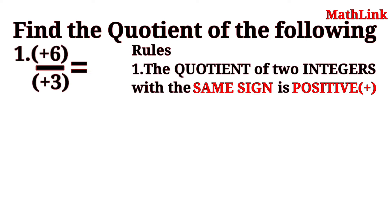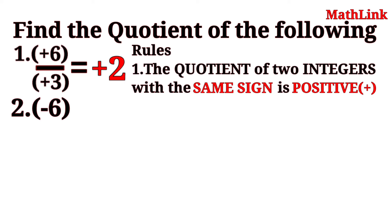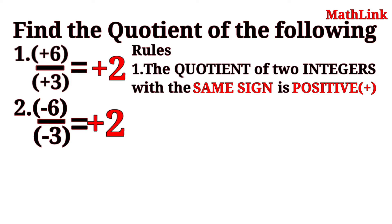Let us answer number 1. Positive 6 divided by positive 3 is equal to positive 2 — positive sign because the two integers have the same positive sign. Number 2: Negative 6 divided by negative 3 is equal to positive 2 — positive sign because the two integers have the same negative sign.